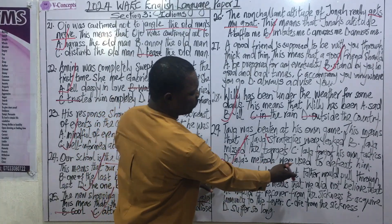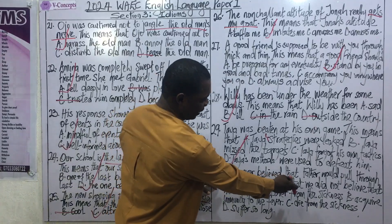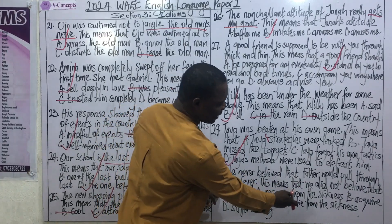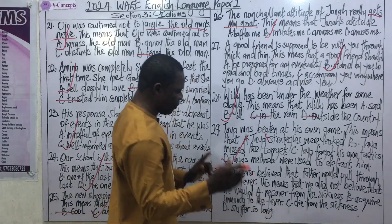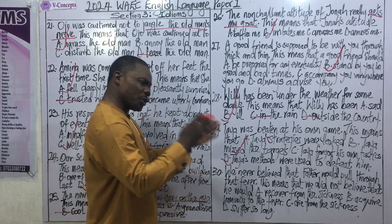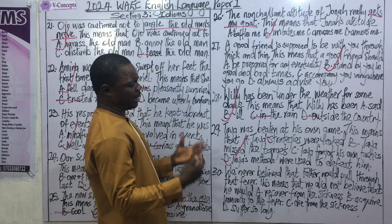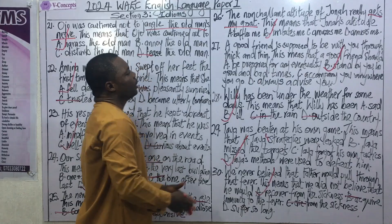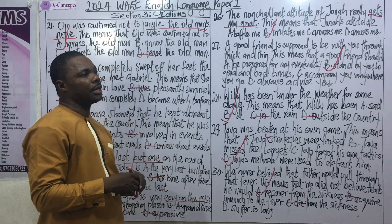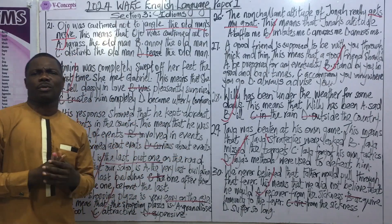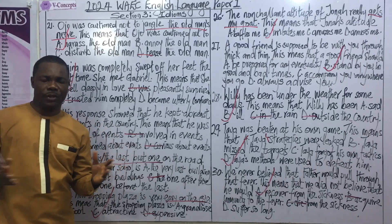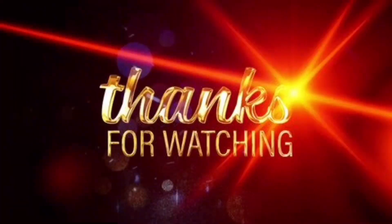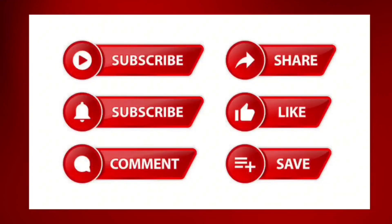Question 30: We never believed that father would pull through that fever. This means we did not believe that he would: A) recover from the sickness, B) acquire immunity to the fever, C) die from the sickness, D) suffer so long. The correct answer is A — recover from the sickness. Note that the word 'fever' from the idiom should not be repeated in the correct option. This brings us to the end of episode three. Join me in the next video where we shall be examining the fourth section on synonyms.